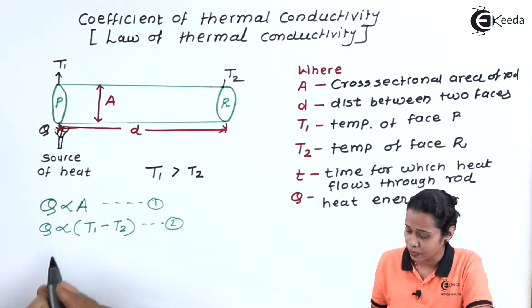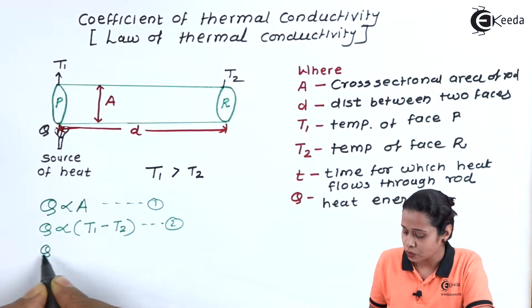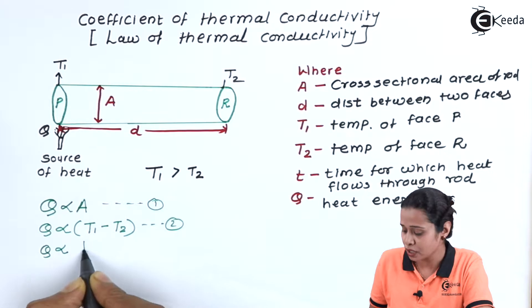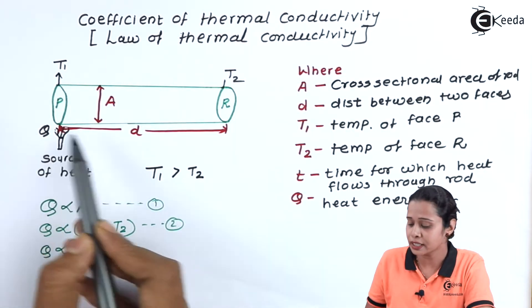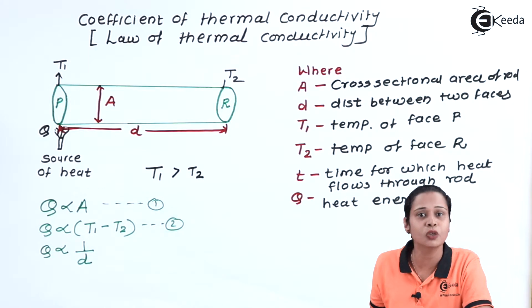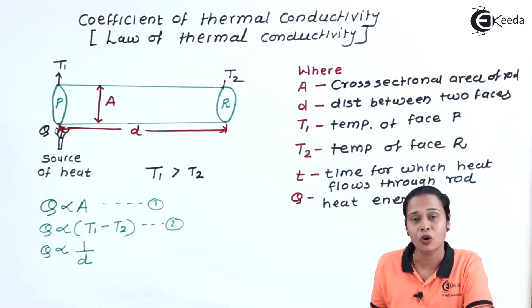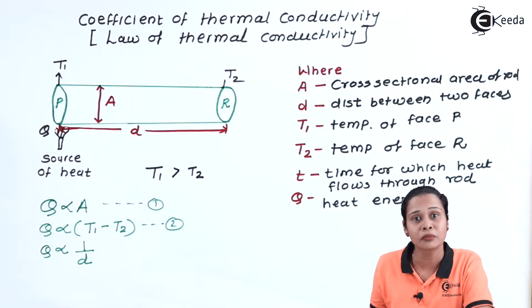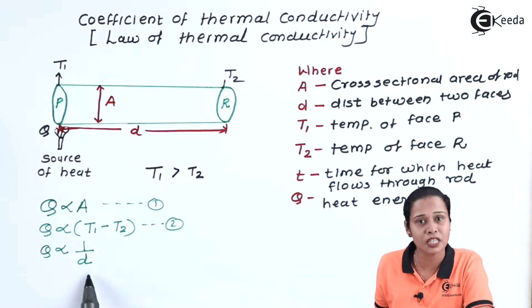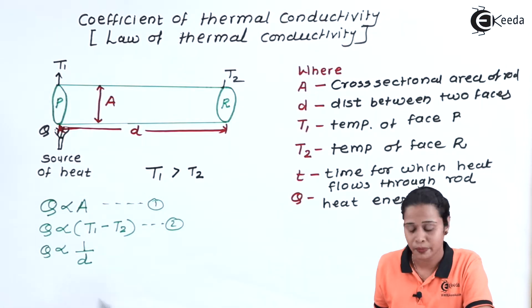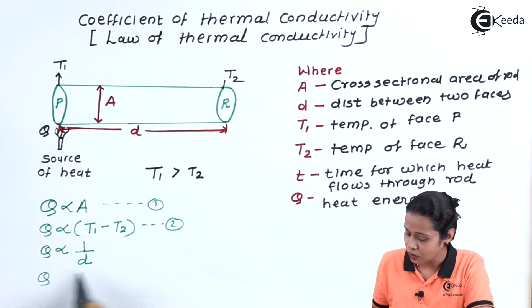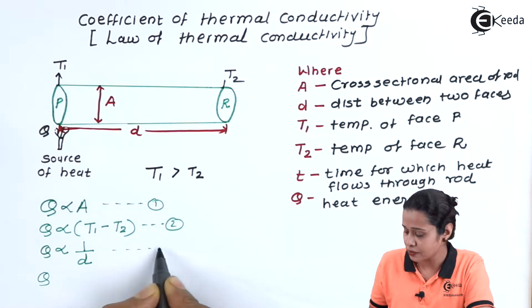Next, we have D. Q is inversely proportional to D, which is the distance between the two faces. If the length or distance is more, it will take more time to heat up. That is why Q is inversely proportional to D. This is equation number 3.